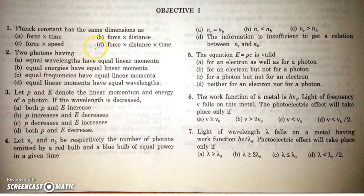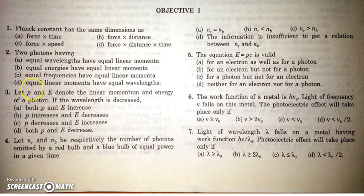Therefore D is the correct option. The second question states: two photons having equal linear momentum will have equal wavelengths. This is correct as mentioned in the book.